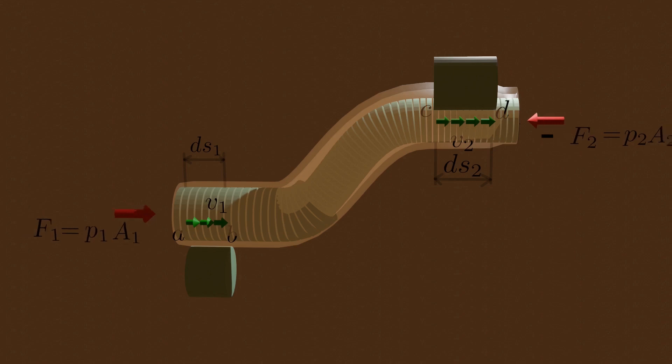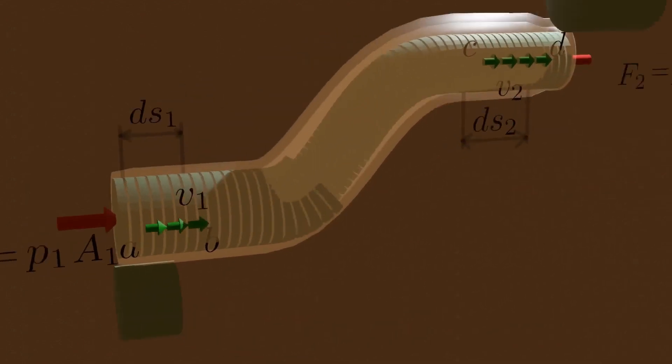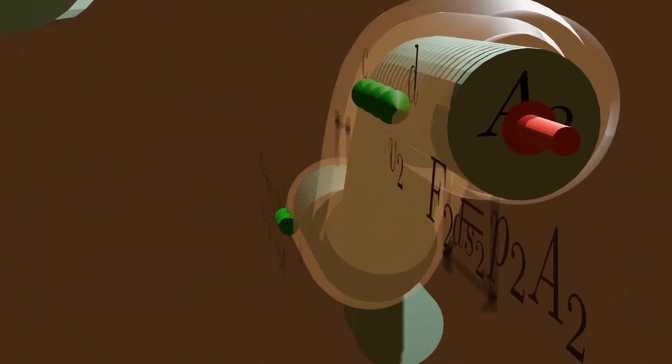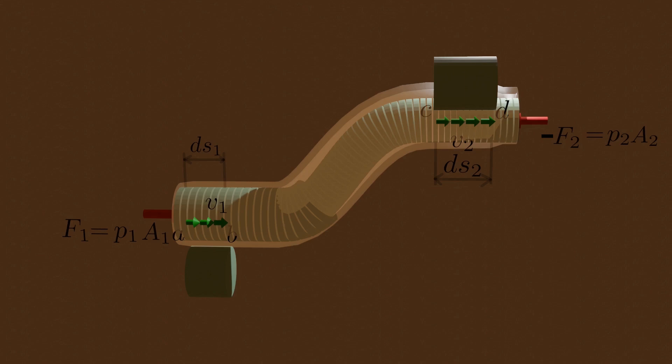Force at A acts in positive direction, whereas force at C acts in negative direction. It is in negative direction because the force at C opposes the displacement of the fluid. Think of it as the reaction force.